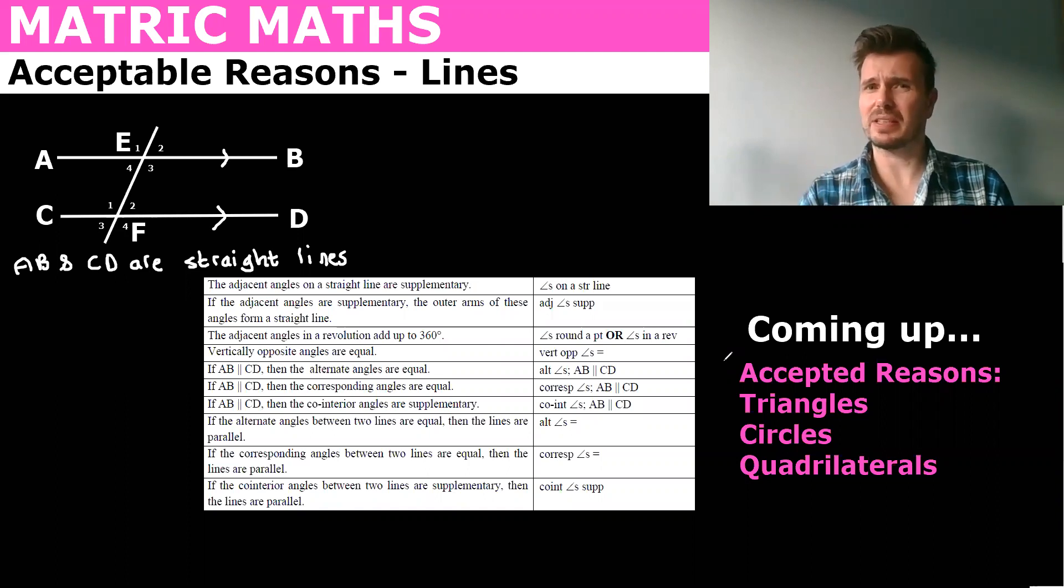Now this might seem basic stuff, especially when you look at the straight lines. You've done this in grade 8. Why are we going over it again? Well, the reason is because I'm not interested in that you know what an alternate angle is. I'm interested in that you write the correct reason down in brackets and we're going to be doing triangles and quads and circles and it'll get a little bit more complicated.